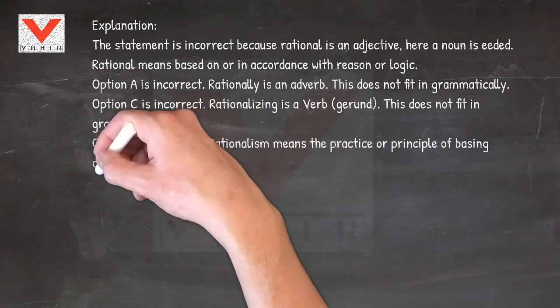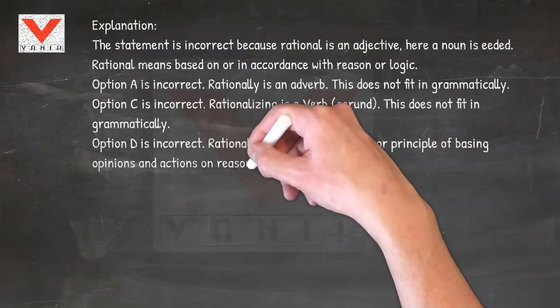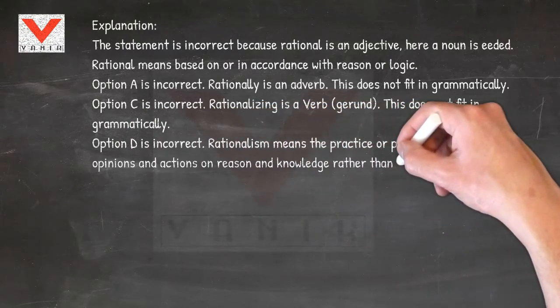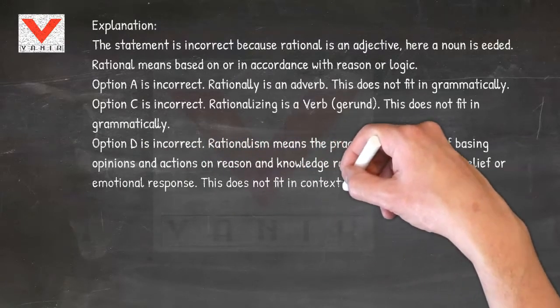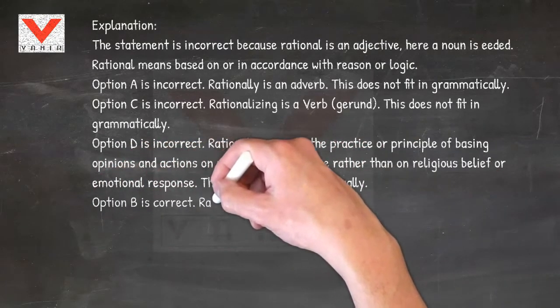Option D is incorrect. Rationalism means the practice or principle of basing opinions and actions on reason and knowledge rather than on religious belief or emotional response. This does not fit in contextually.